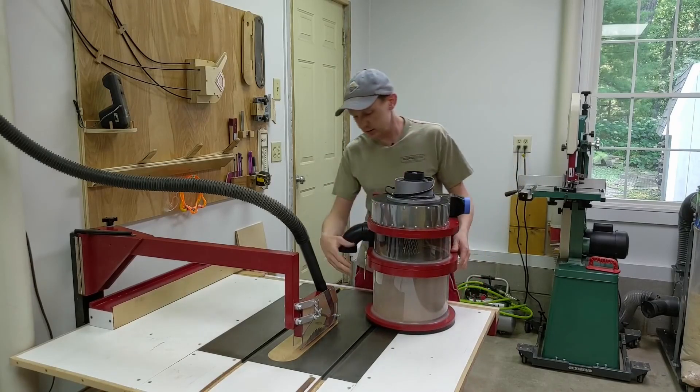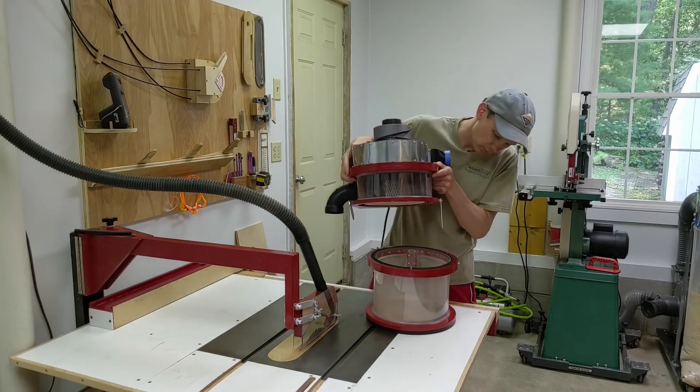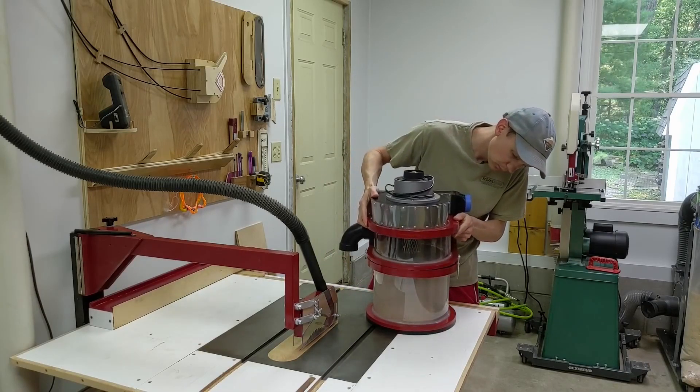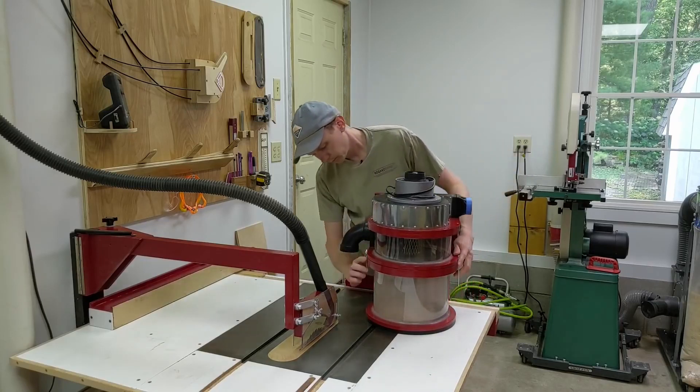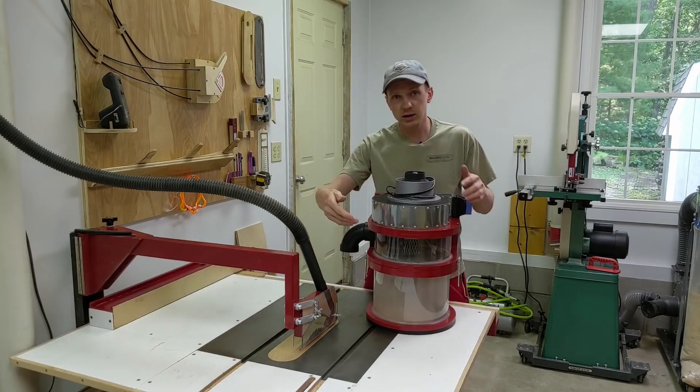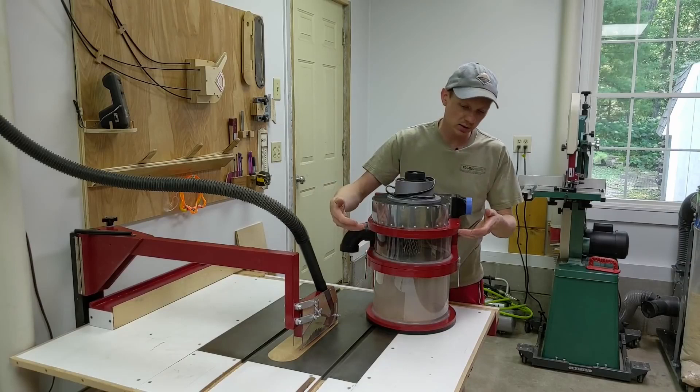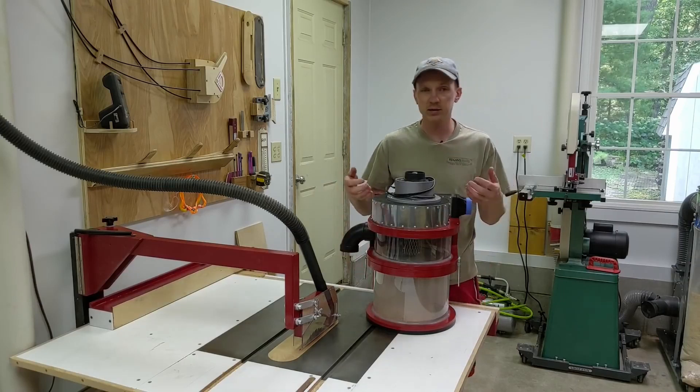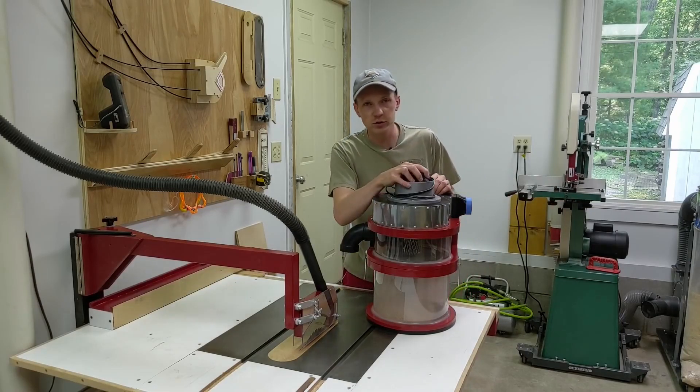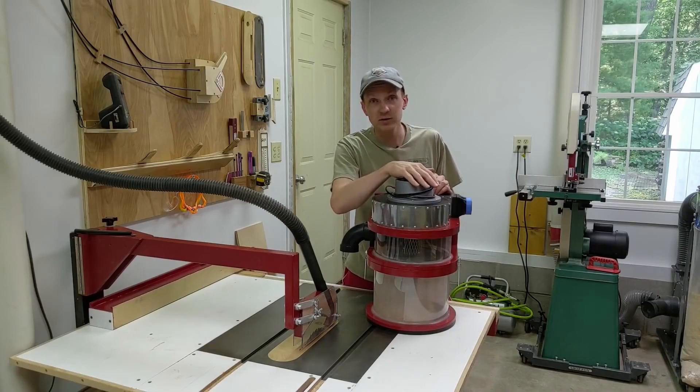It's pretty easy to empty the collection bucket. It's got a cyclone chamber to help separate the big chips, and the fine dust goes out through the top. Since it's made from an old shop vac, it's got a ton of suction.